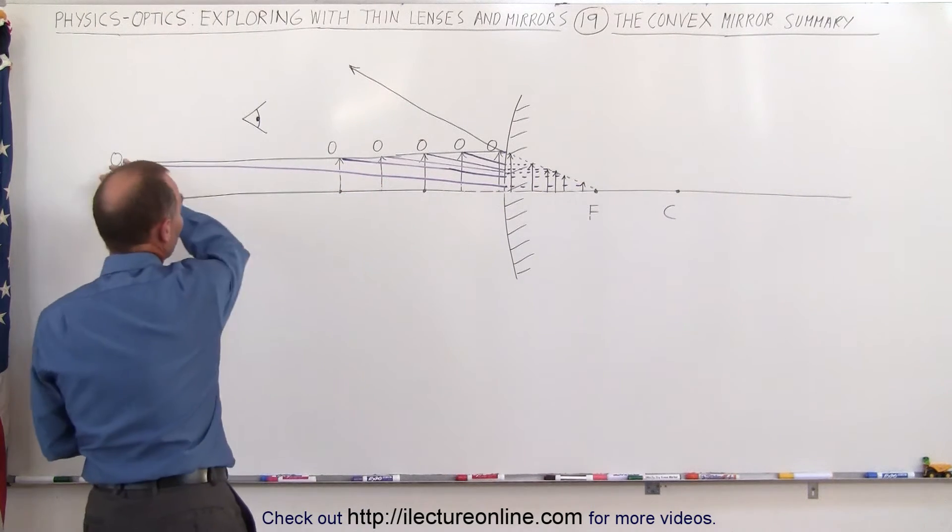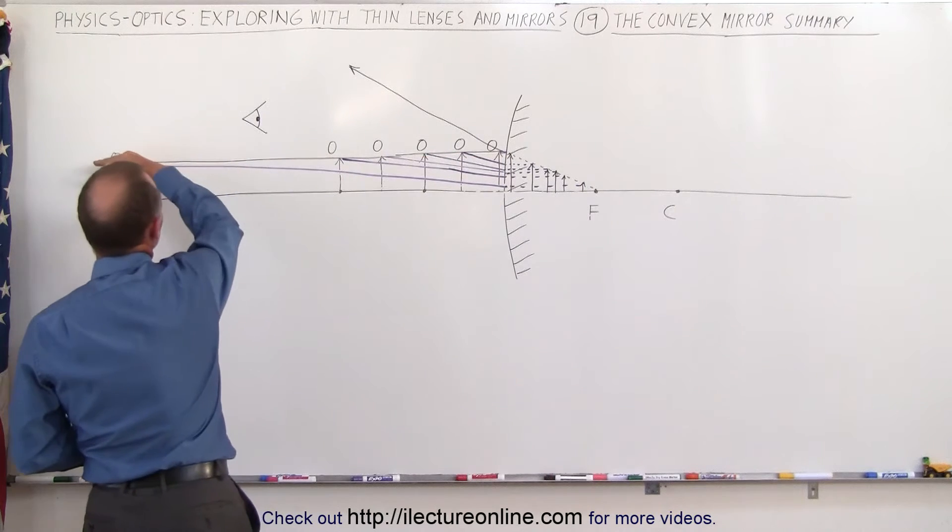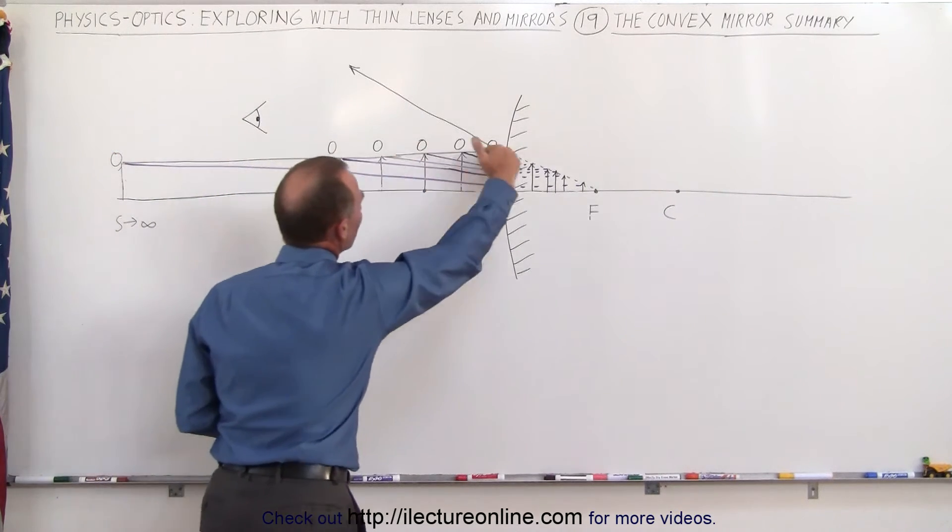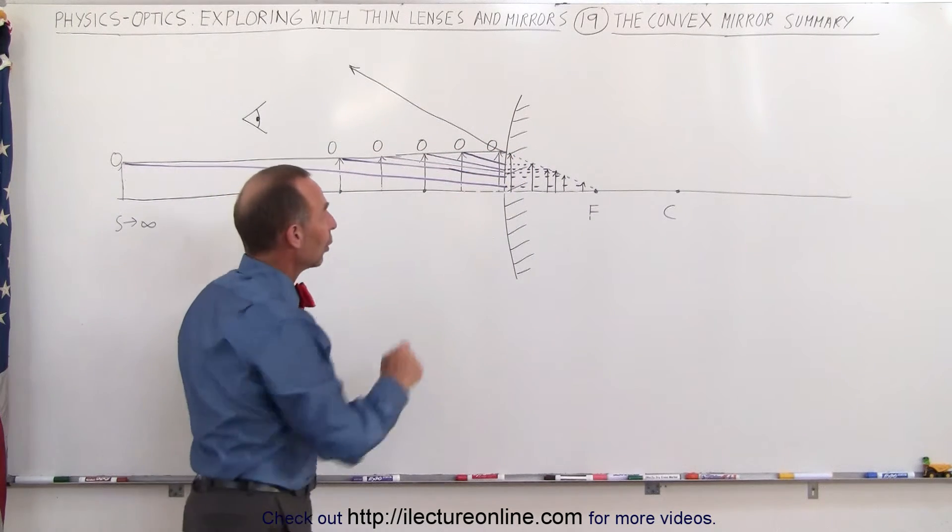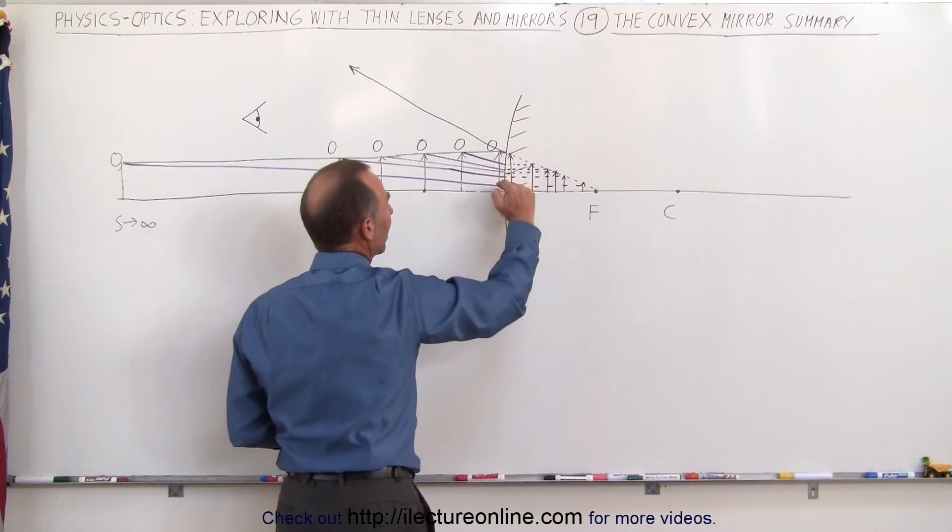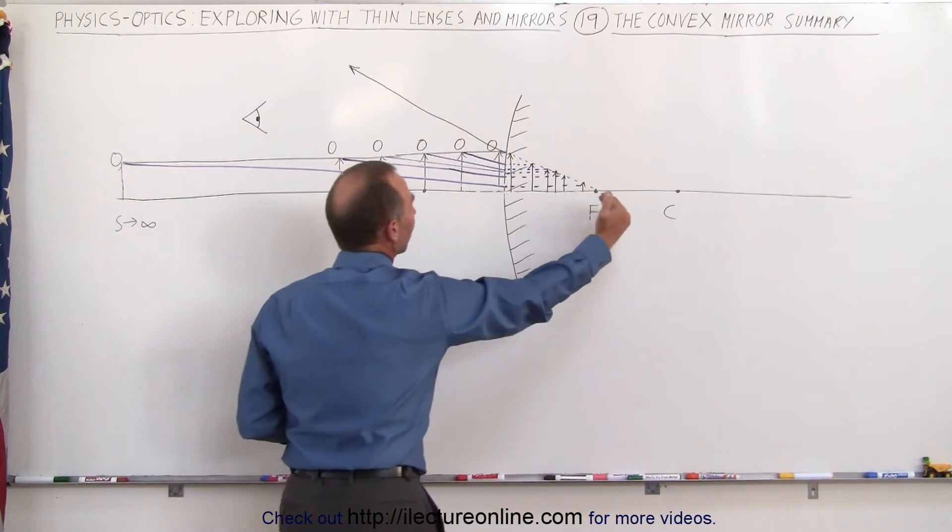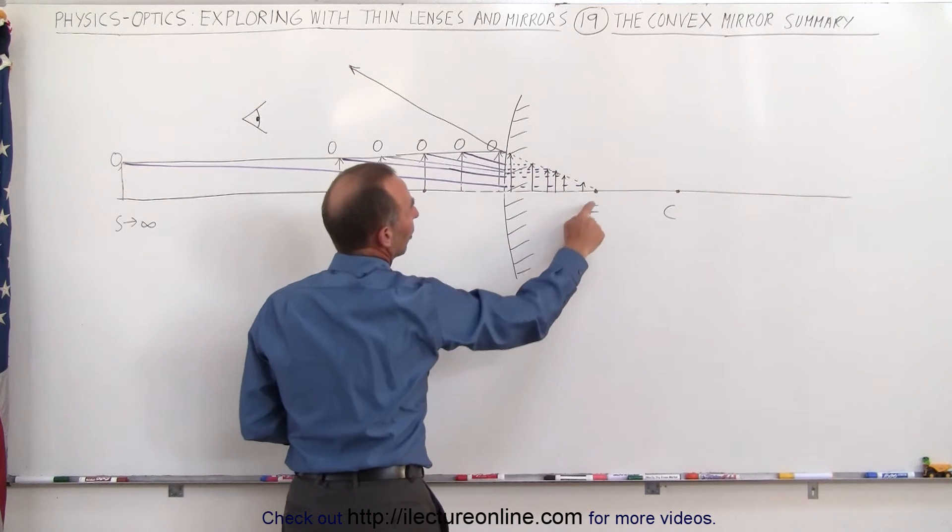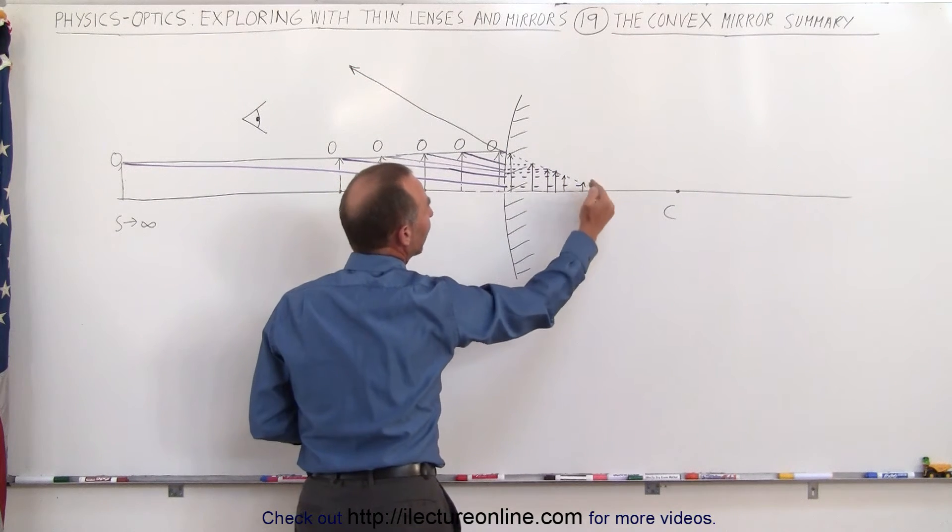Well notice that regardless of where you place the object, the first ray will always be drawn from the top of the object towards the mirror, parallel to the optical axis. They will always hit the mirror at the very same point, very same distance away from the optical axis, then the reflection of that ray will always be in the same direction as if it came from the focal point behind the mirror.